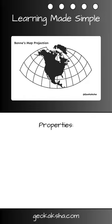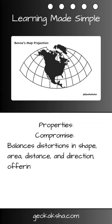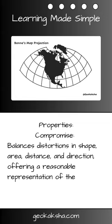Secondly, Born's projection is a compromise between different projections. It balances distortions in shape, area, distance, and direction, offering a reasonable representation of the Earth's surface.